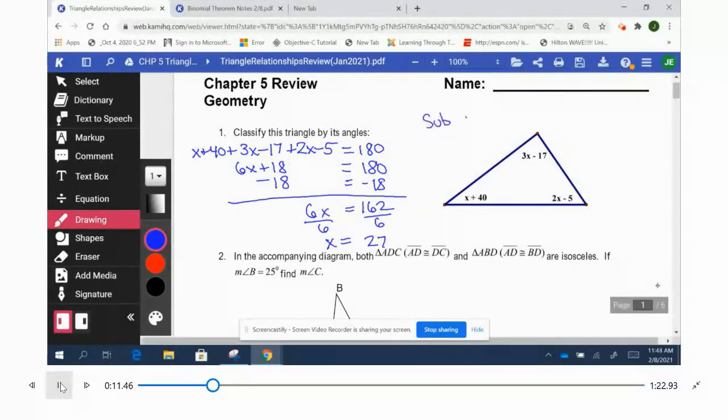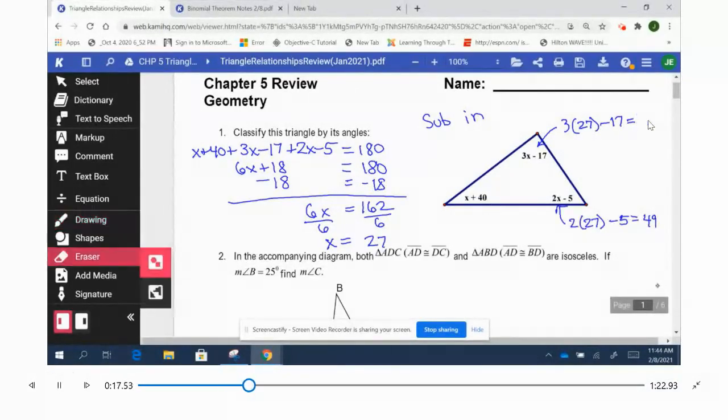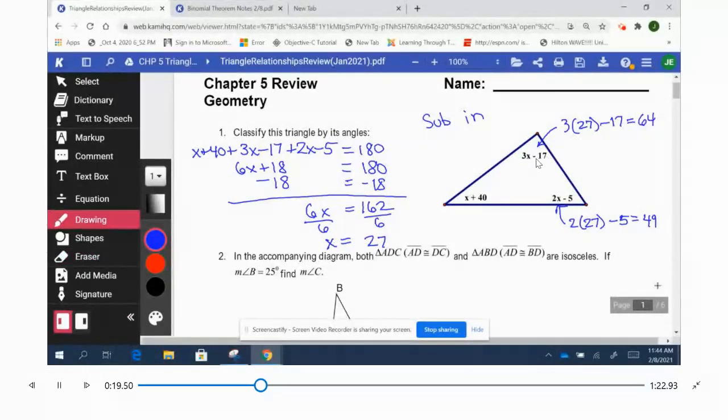And classify it based on its largest angle. That first one's 81, 64, 49, and 67. So based on the largest angle of 67, this is going to be an acute angle and they're all different, so we can also say it's scalene.